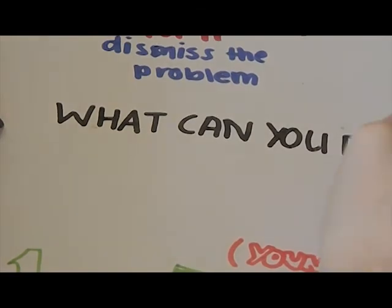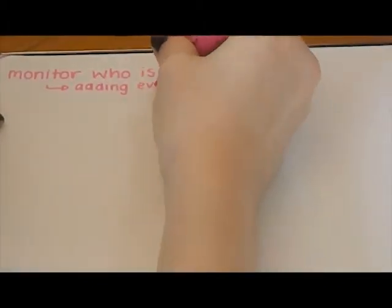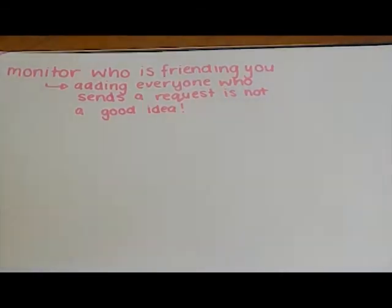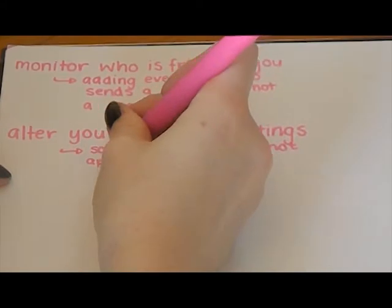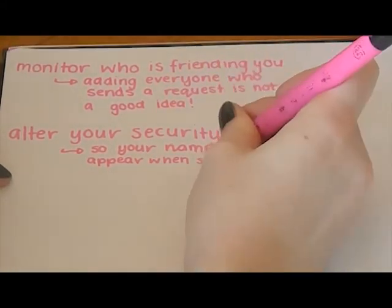What can you do? Monitor who is friending you on these social networks. Adding everyone who sends a request is an awful idea. Security settings on your networks can be altered to suit you. You can change it so your name does not appear when someone types it into the Facebook search bar.